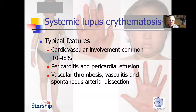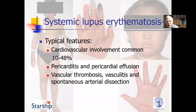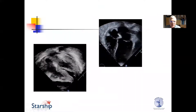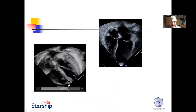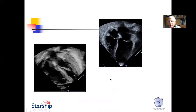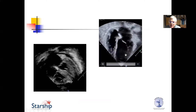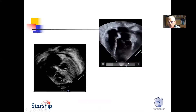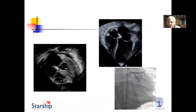Moving on to SLE, cardiovascular involvement is common and seen in between 10 and 50% of patients, depending on the series. In our experience in children, pericarditis and pericardial effusion are the commonest presentations, with some unusual presentations related to vascular thrombus, vasculitis, and spontaneous arterial dissection. This is an example of a patient whose first presentation with SLE was with tamponade, which required drainage. Another patient presented in cardiogenic shock with SLE and thrombosis of the left anterior descending and circumflex coronary arteries, treated with percutaneous stenting.